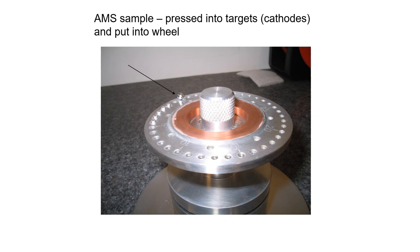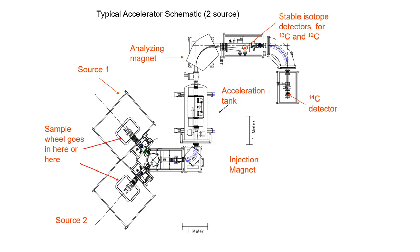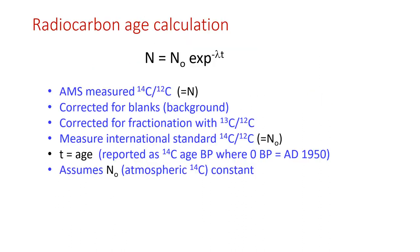The sample is then pressed into what we call a target or cathode and put into a wheel to go into the AMS. This is a typical schematic of an accelerator with two sources. The sample wheel goes in either here or here. It's then ionized and goes through a series of magnets, an accelerator tank, and finally an analyzing magnet that separates the stable isotopes carbon-13 and carbon-12, while the carbon-14 goes on to a detector where the carbon-14 atoms are counted.